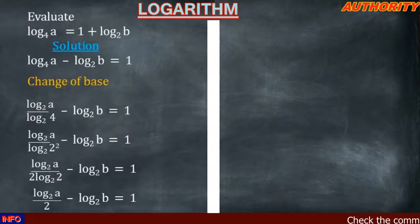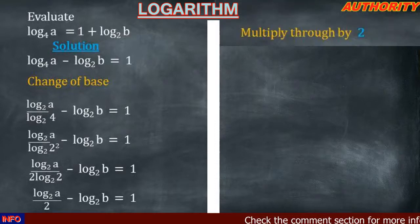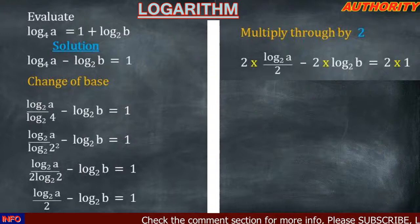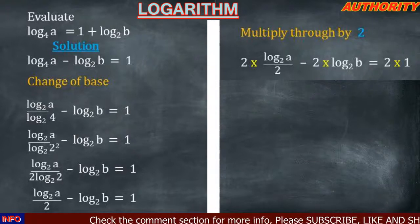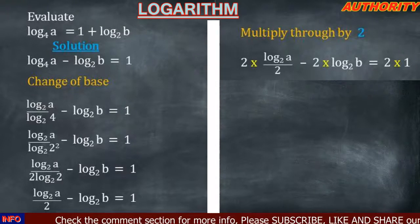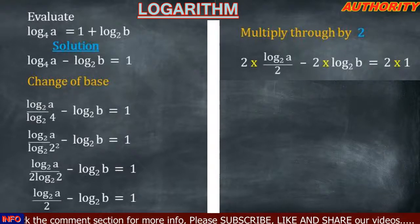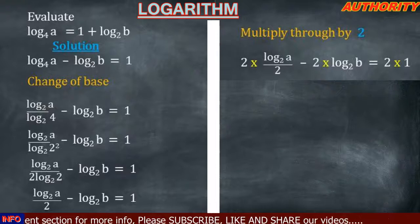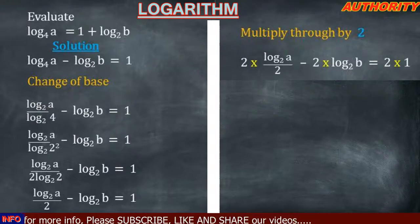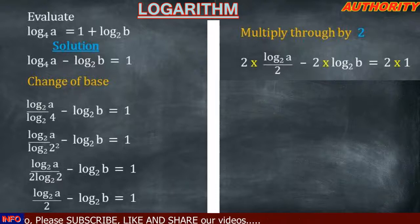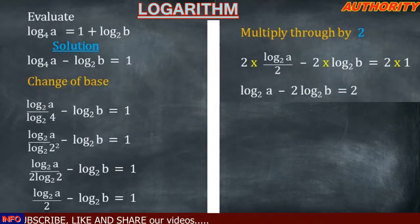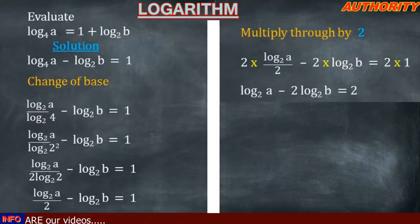We have a fraction, so let's clear it by multiplying through by 2. That gives us 2 times log a base 2 all over 2, minus 2 times log b base 2 equal to 2 times 1. In the first term the 2 cancels the denominator, leaving log a base 2 minus 2 log b base 2 equal to 2.